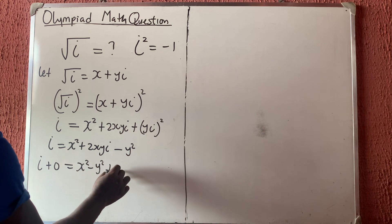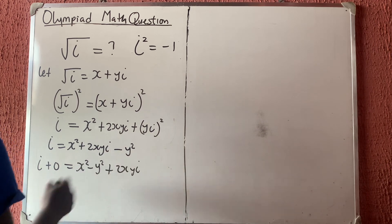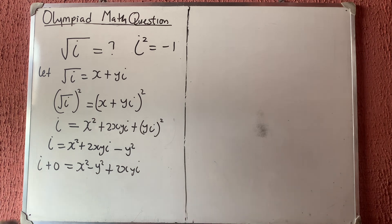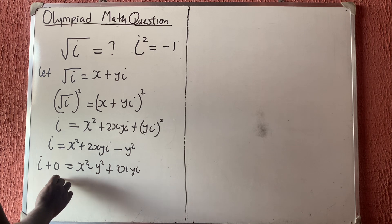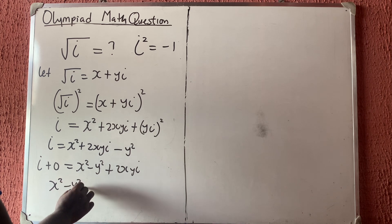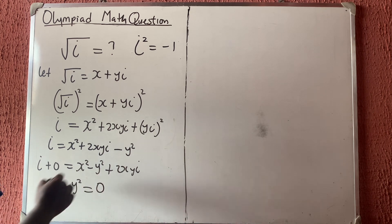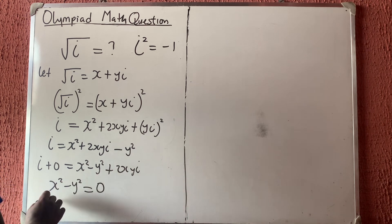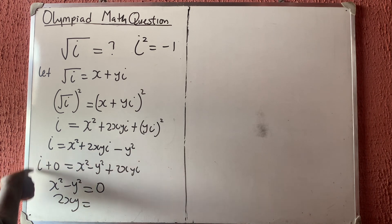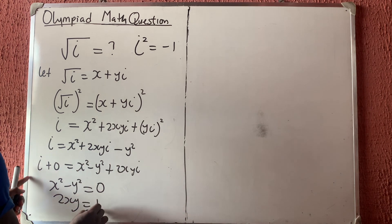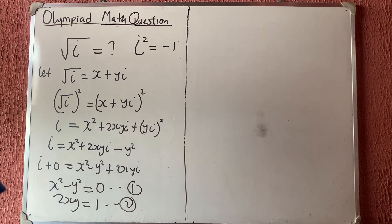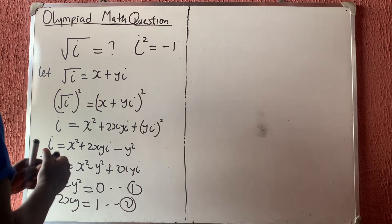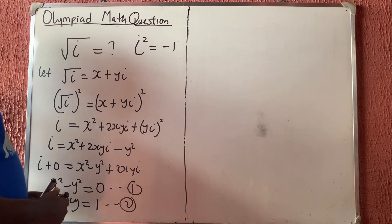For comparison, we equate real and imaginary parts. The part without i — which is x squared minus y squared — should equal 0. That's equation 1. The part with i — which is 2xy — should equal the coefficient of i on the left side, which is 1. That's equation 2.